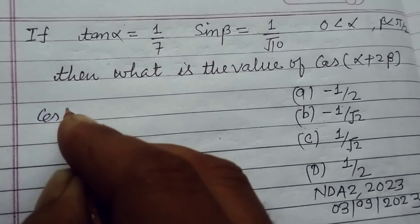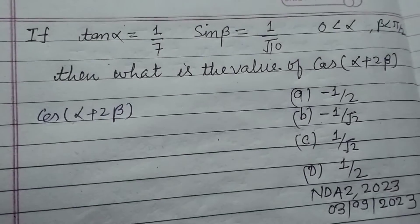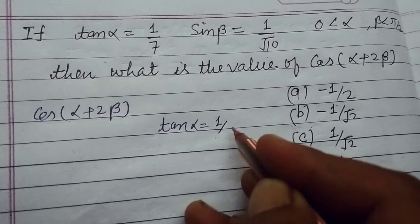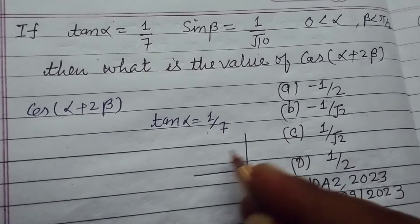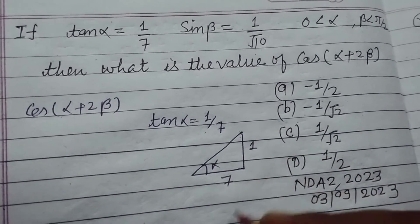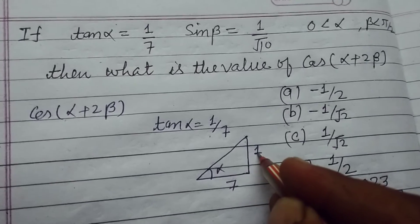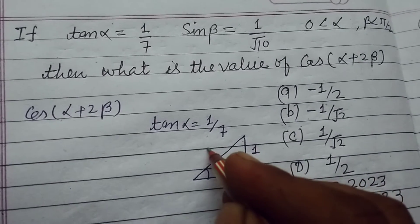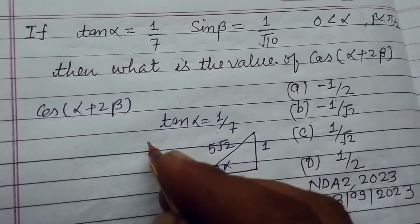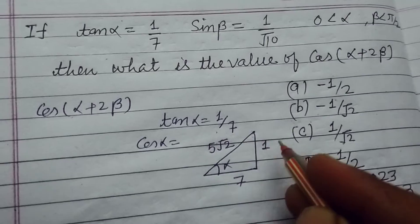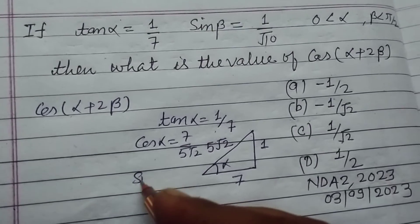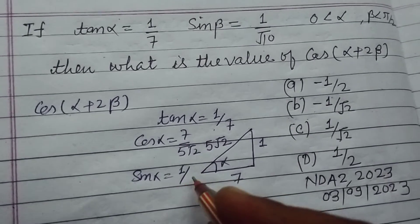Here cos(α + 2β) is asked, and tan α is given as 1 upon 7. We can make a triangle with angle α where tan α equals perpendicular over base, giving us 1 and 7. So the hypotenuse is √(1² + 7²) = √50 = 5√2. From here we get cos α = 7 upon 5√2 and sin α = 1 upon 5√2.